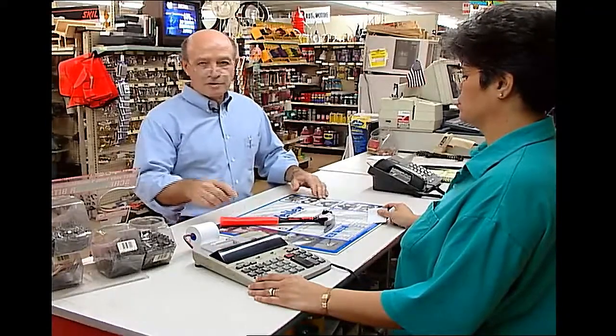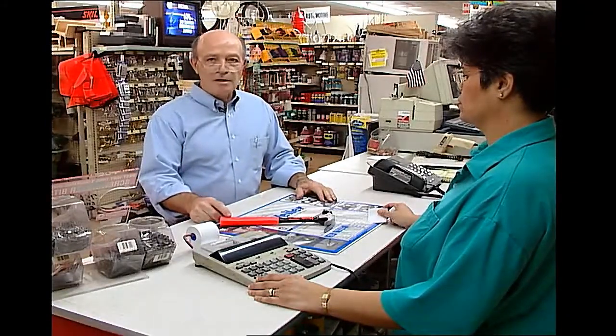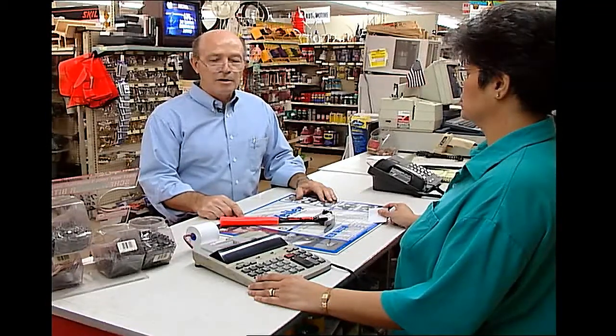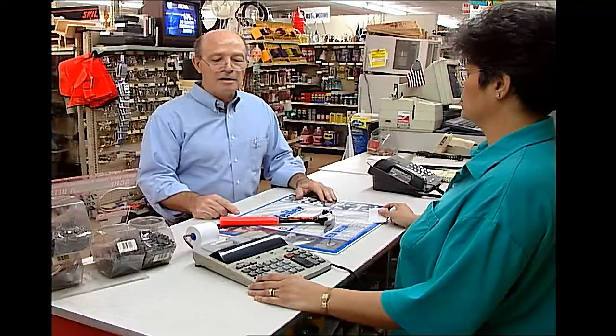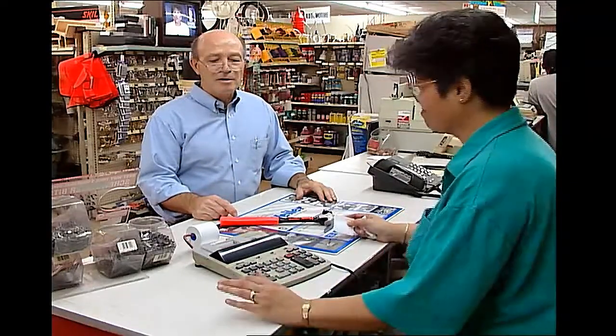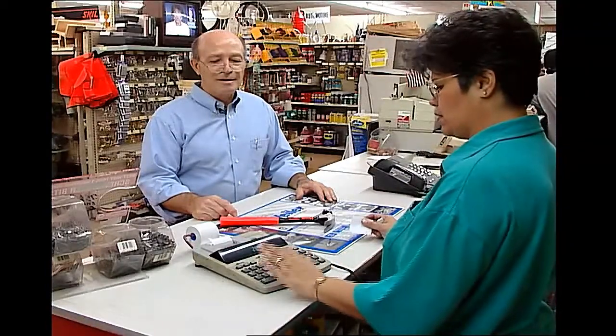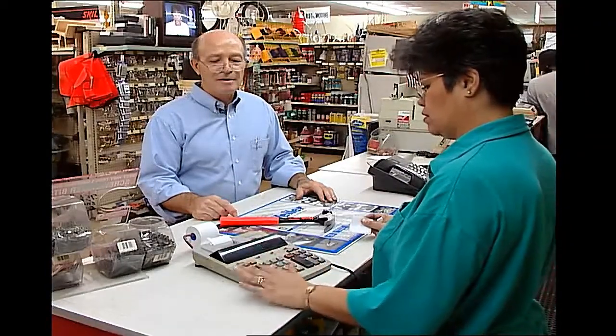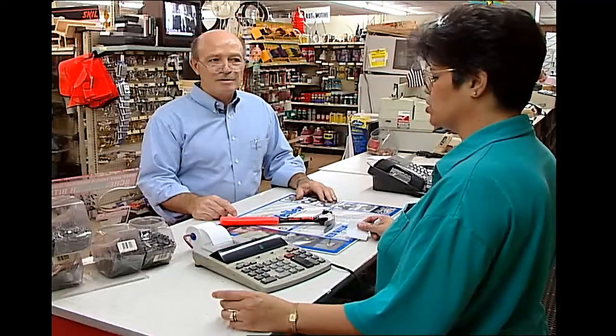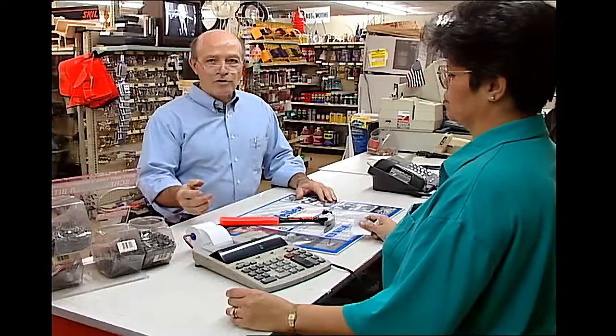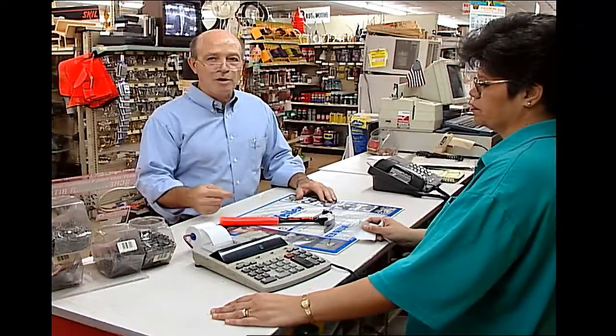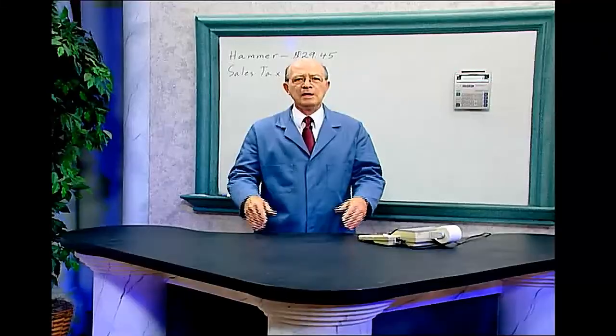This hammer sells for twenty-nine forty-five. The sales tax here is eight and a quarter. Patty is going to have to convert that into decimal. So Patty had to convert eight and a quarter percent to decimal, which is eight point two five. Let's do the math.